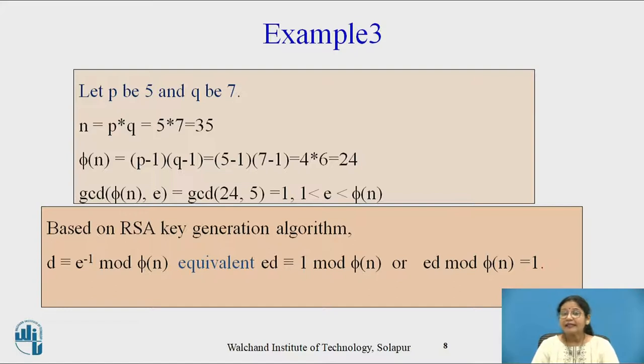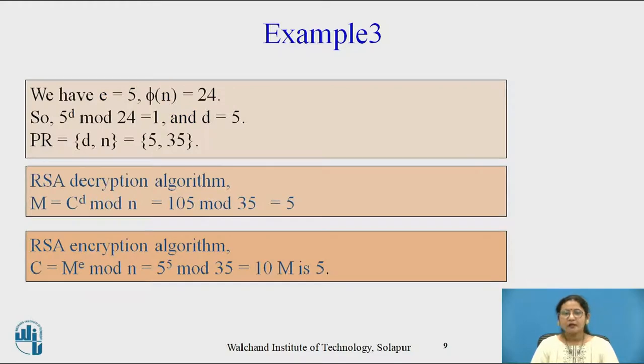Now time to generate d, or compute d. This is also an equivalent formula: d equals e raised to -1 mod phi of n, which is equivalent to ed equals 1 mod phi of n, or ed mod phi of n equals 1. How you want to write it depends on you. We have e=5, phi of n is 24, so 5d mod 24 equals 1. By calculation we determine d equals 5.